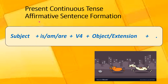Let me tell you about the affirmative sentence formation of present continuous tense. First comes the subject at the start of the sentence. Then you add is, am, or are as helping or auxiliary verbs. Then you put the fourth form of the verb — if you add -ing at the end of the first form of the verb, it becomes the fourth form, also called the present participle. Then you add the object or extension, and at the end you have a full stop.